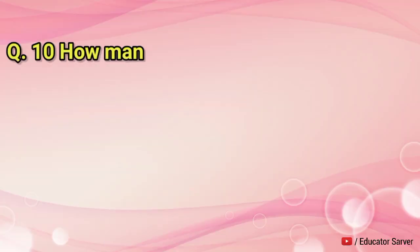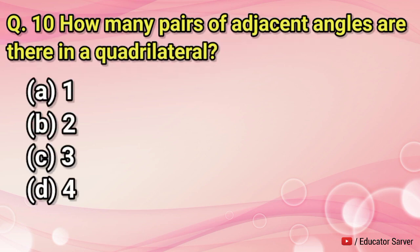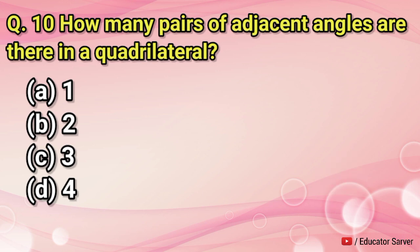Question number ten: how many pairs of adjacent angles are there in a quadrilateral? Options are one, two, three, and four. The right answer is two.